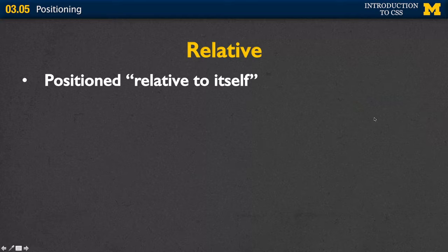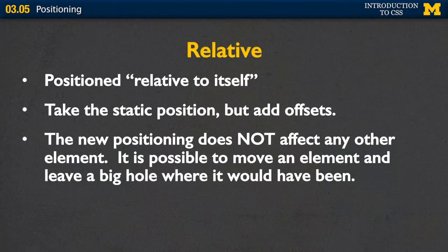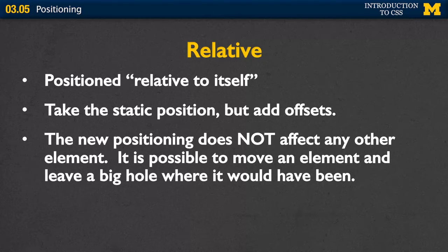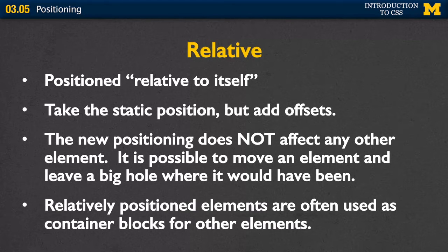We can go beyond that and change how the browser positions things. One way is to use position relative — and when I say relative, I mean relative to itself. Where would it normally go? Basically it's very similar to the static position, but now you get to add these offsets. The new place we put the element is not going to affect any of its neighbors. Instead, it may leave holes where the browser thought it should have been in the first place. Usually relatively positioned elements are used as containers or blocks for other elements.